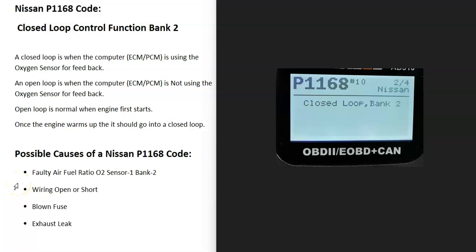And so what is a Nissan P1168 code? Well, it's a closed loop control function bank 2. And what does this mean?